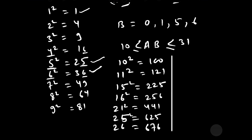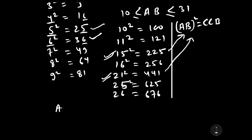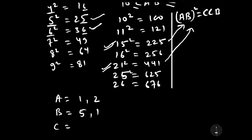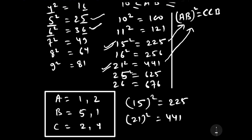We are interested in numbers whose square matches the pattern CCB — where the first two digits are the same and the last digit is B. Observing our results, 15²=225 matches (C=2, B=5) and 21²=441 matches (C=4, B=1). Therefore, the required solutions are: A=1, B=5, C=2 (giving 15²=225) and A=2, B=1, C=4 (giving 21²=441).